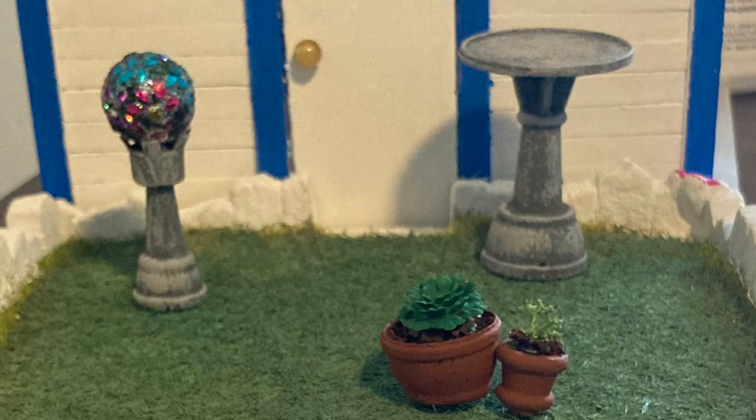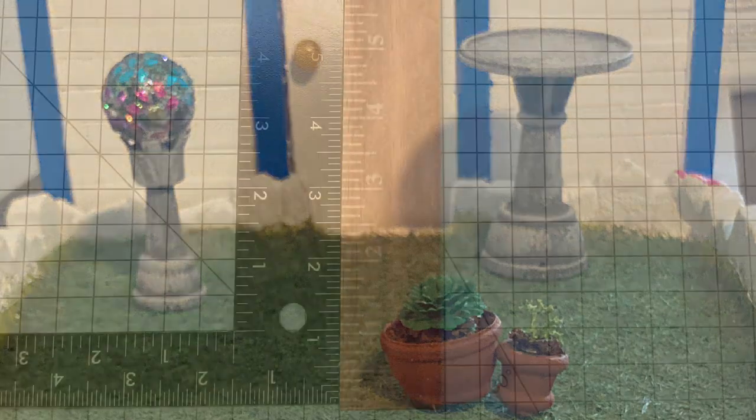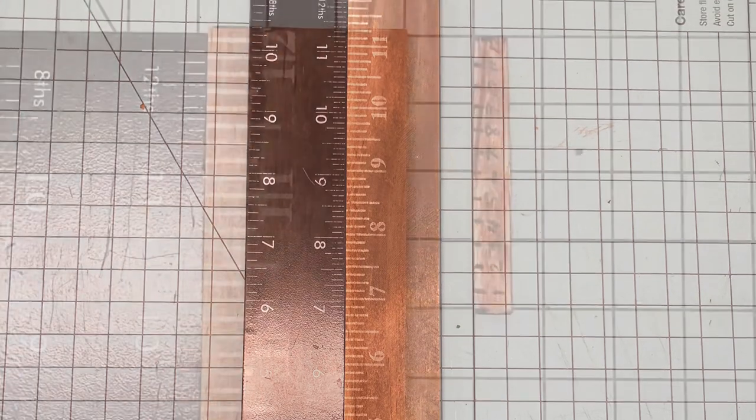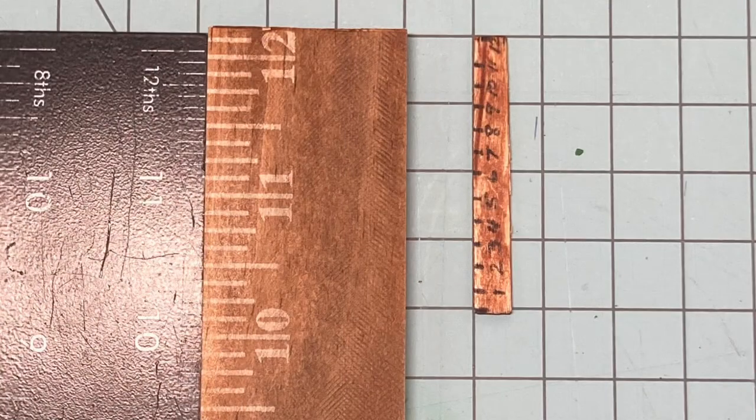The three most common measurements for dollhouse scale are 1/6th, 1/12th, and 1/24th. 1/6th scale or play scale is used for fashion dolls like Barbie. One-sixth means for every one foot in real life, it's two inches in the fashion doll world.